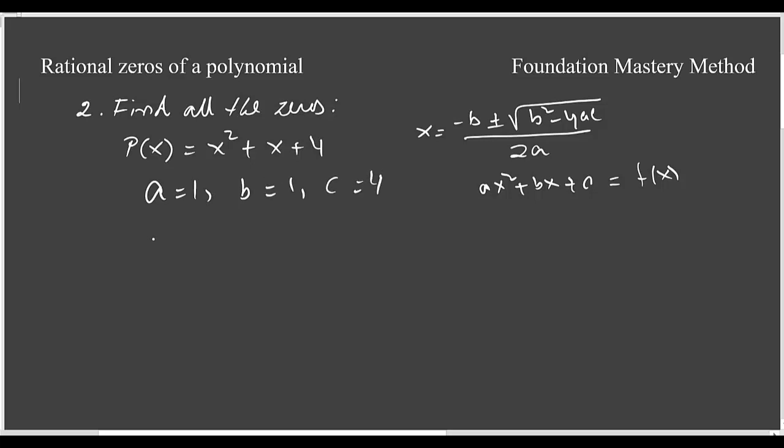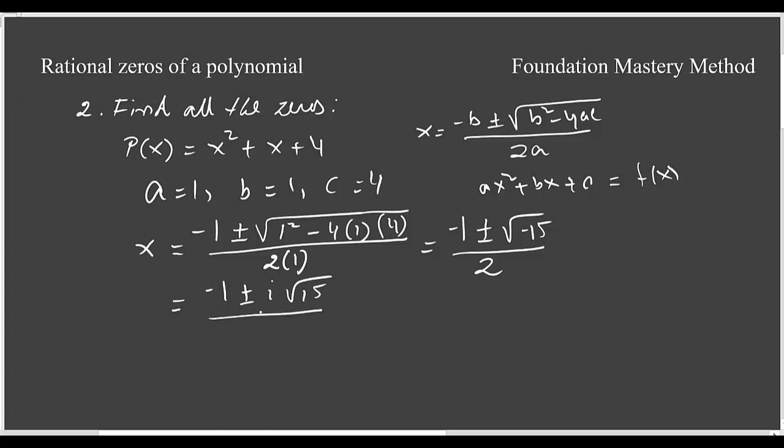Then you can apply the quadratic formula that gives you -1 ± √(1 - 4(1)(4)) / 2(1). Now if you simplify further, you get -1 ± √(-15) over 2. Further simplification will give you -1 ± i√15 over 2.